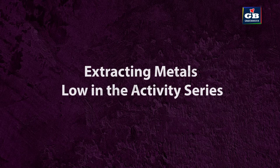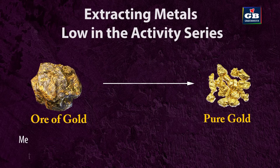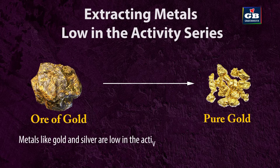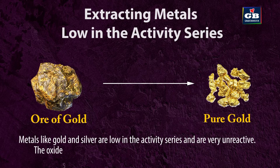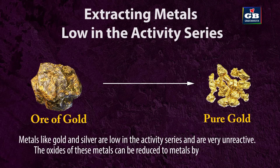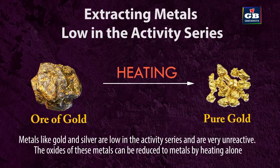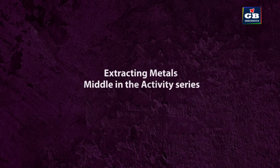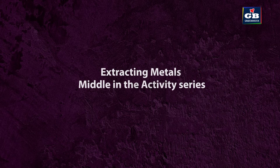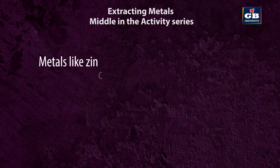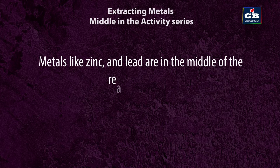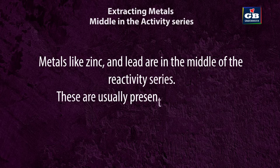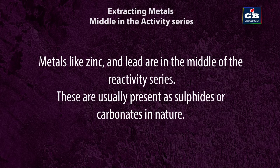Extracting metals low in the activity series. Metals like gold and silver are low in the activity series and are very unreactive. The oxides of these metals can be reduced to metals by heating alone. Extracting metals in the middle of the activity series: metals like zinc and lead are in the middle of the reactivity series and are usually present as sulfides or carbonates in nature.